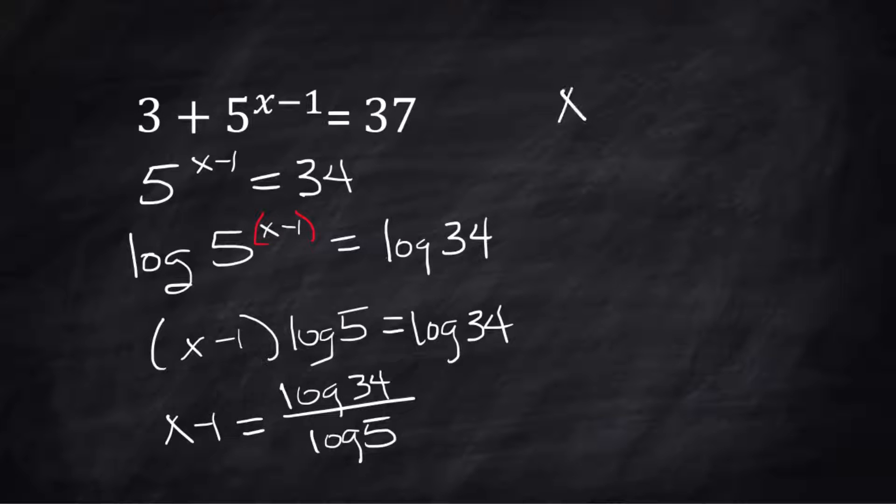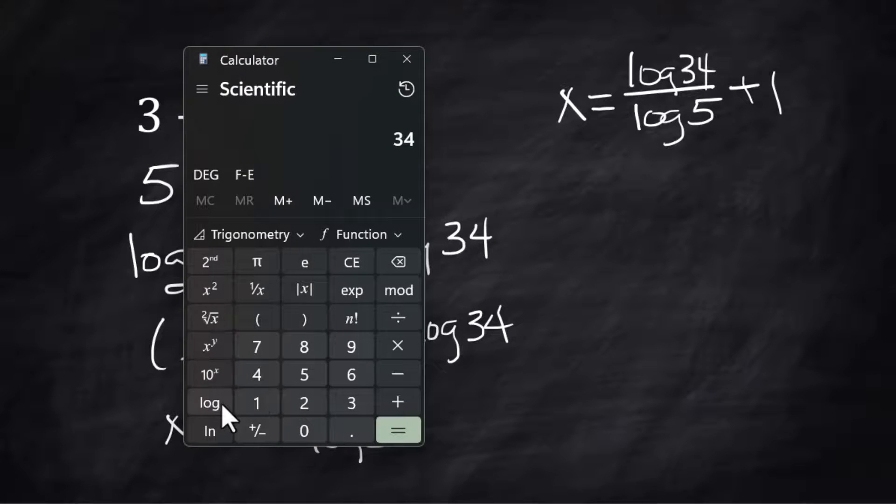x - 1 = log(34)/log(5). The last step where I'm going to add 1 to both sides: x = log(34)/log(5) + 1. Now I need to use the log button, not the natural log button.